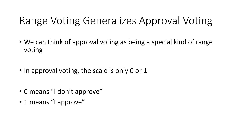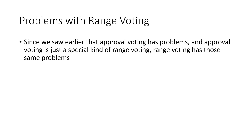Because approval voting has problems and approval voting is just a special kind of range voting, range voting has those problems too. We can construct examples that illustrate the same weird situations we saw with approval voting.